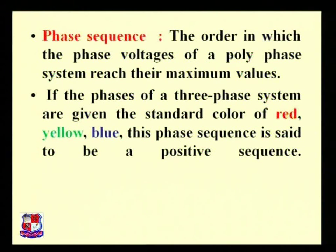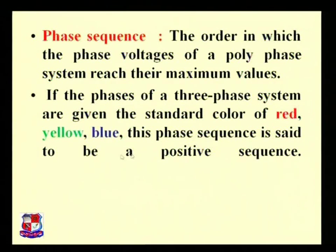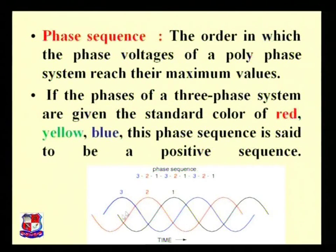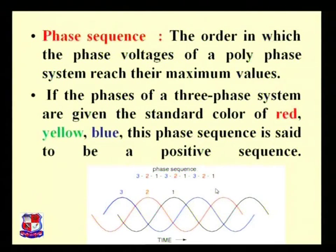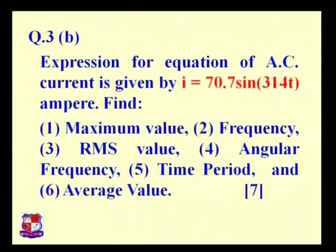Next is phase sequence — the order in which the phase voltages of a polyphase system reach their maximum value. The order is important. If the phases of a three-phase system are given in the standard colors red, yellow, blue, this phase sequence is said to be a positive sequence. In the figure, signals follow the order 3, 2, 1 repeating, which is a defined phase sequence.